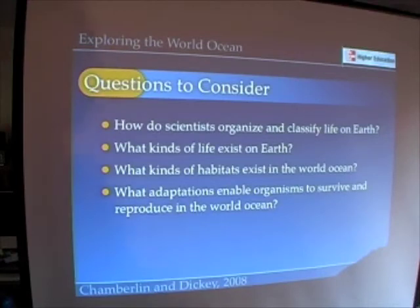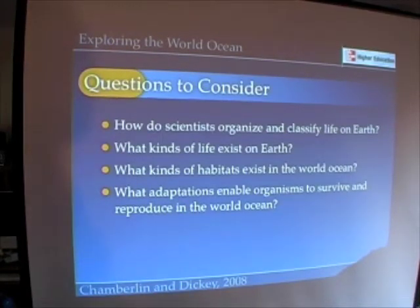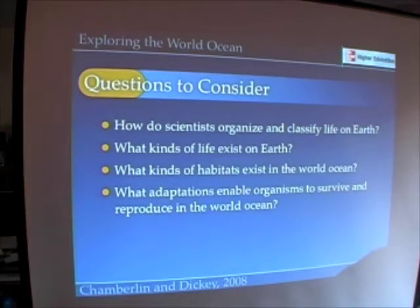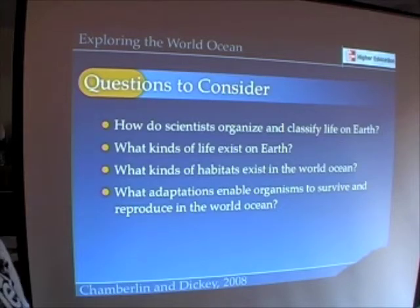In this chapter, we'd like to understand how scientists organize and classify life on Earth. What kinds of life exist on Earth? What kinds of habitats exist in the world ocean for life to exploit? And what adaptations enable organisms to survive and reproduce in the world ocean?